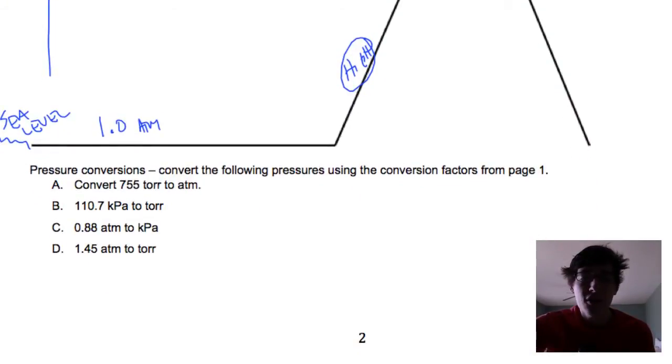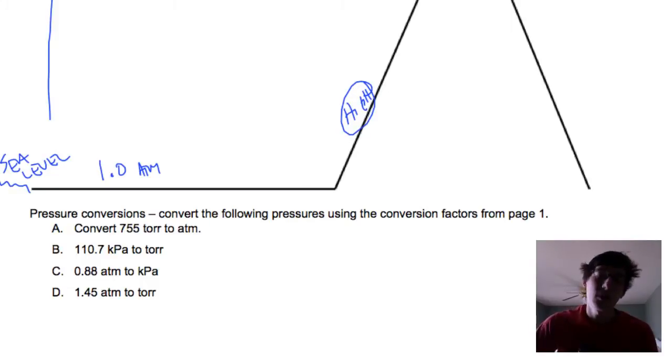And now conversions, these are just like we do chemical conversions, we're going to be canceling units out. We're going to knock out B and C because I forgot to update the questions. We're going to convert 755 torr into atmospheres.